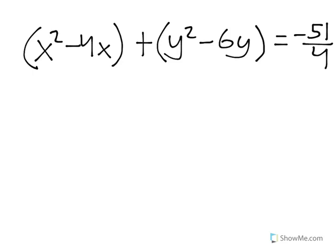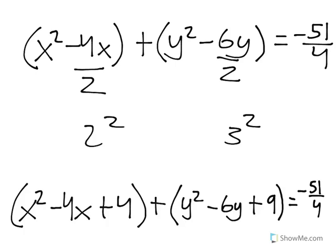In order to find what number you need to add to the inside to make it a perfect square, you have to divide the number attached to the single variable by 2 and then square your result. You then add that value inside your parentheses. Because you added a 4 and a 9 to the left side, you also have to add it to the right side.